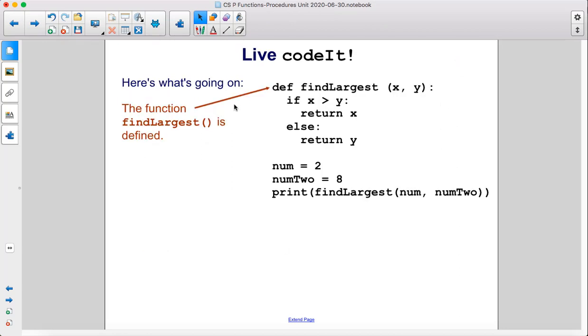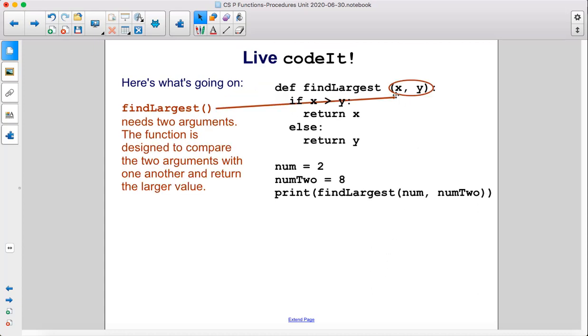Here's what's going on. The function findLargest is defined. FindLargest needs two arguments. The function is designed to compare the two arguments with one another and return the larger value.